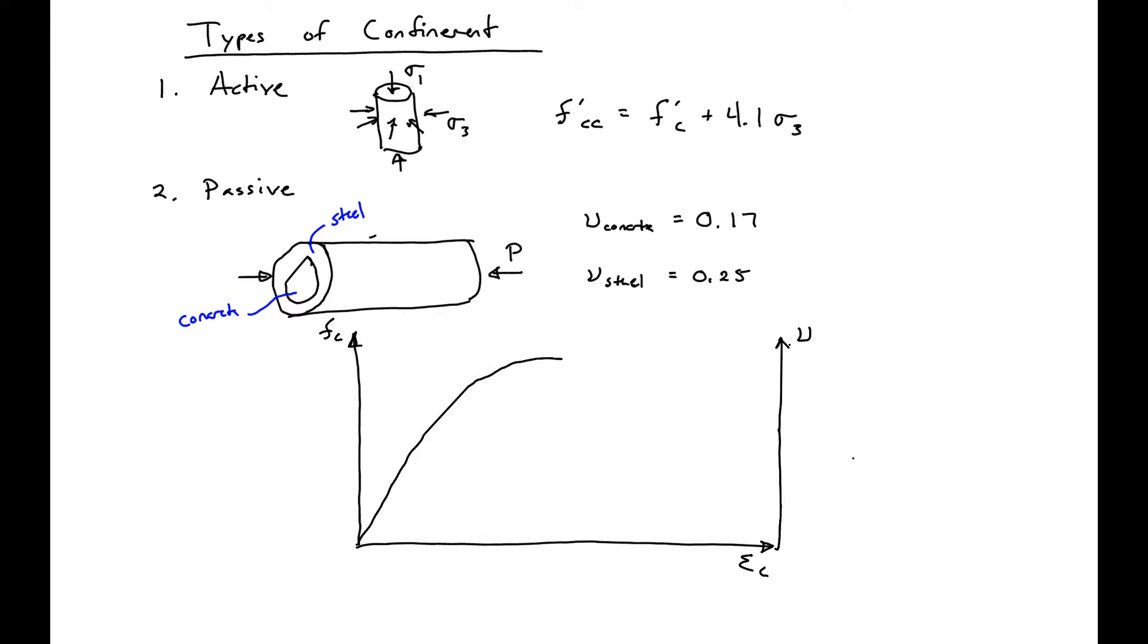So for concrete, our stress strain curve looks something like this, with a maximum stress of F prime C occurring at epsilon naught.